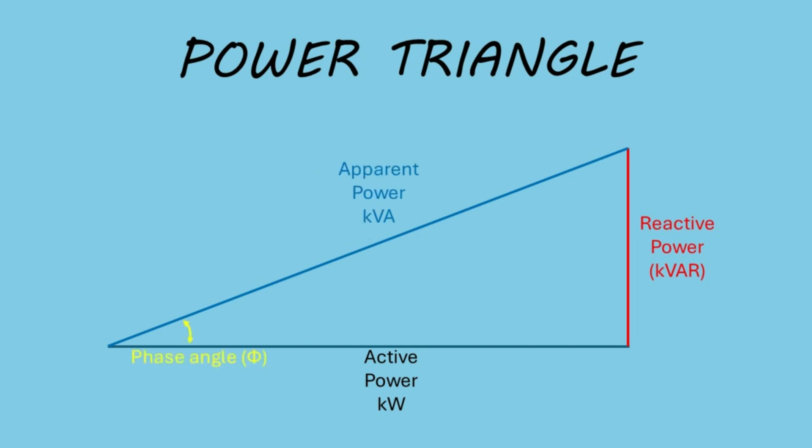The angle between the hypotenuse and the active power leg is called the phase angle. The larger this angle, the more reactive power there is in a circuit, and the lower the power factor. And the higher the phase angle, the more energy losses you'll have in a circuit.